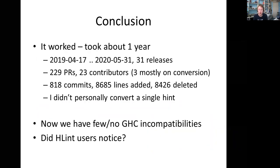Conclusion: it worked. It took us just over a year. During that time, we made 31 releases with 229 PRs from 23 contributors, though only three were focused on conversion. We had 818 commits and changed about 8,500 lines — which of a 9,000-line project isn't bad. And I didn't personally convert a single hint; I did a lot of the prep and cleanup work, but the hint conversion was mostly Shane and Georgi.